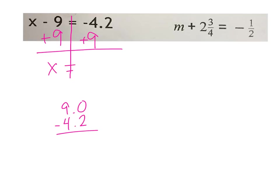We're going to need to do some borrowing. I can't do 0 minus 2, so I borrow. 10 minus 2 gives me 8. Bring my decimal down. 8 minus 4 gives me 4. Keep the sign of the larger number — the larger one was my positive 9. So my answer is x equals positive 4 and 8 tenths.